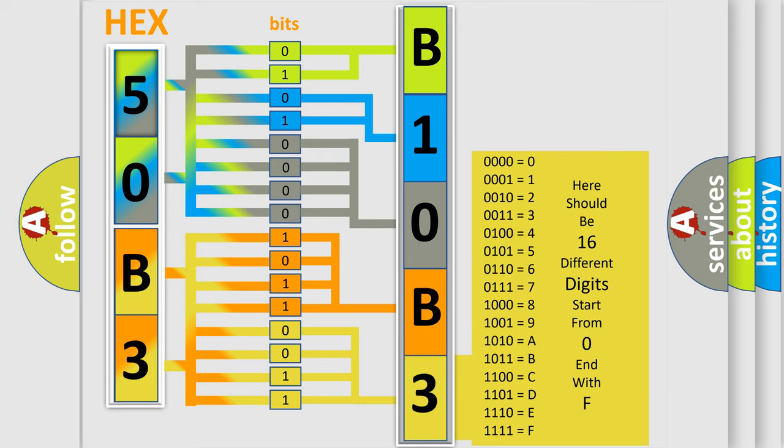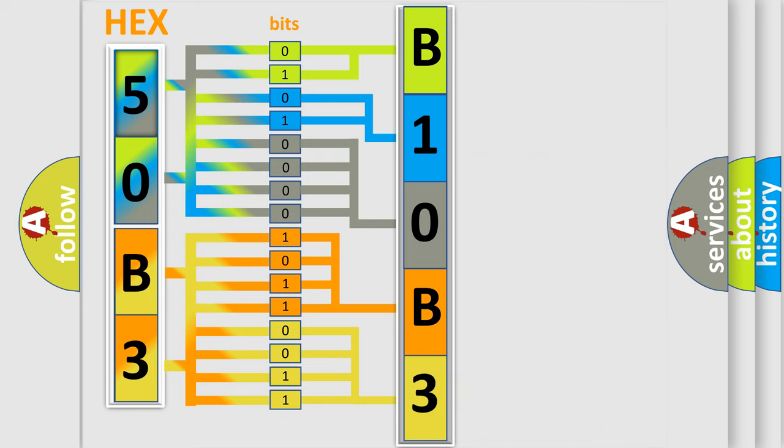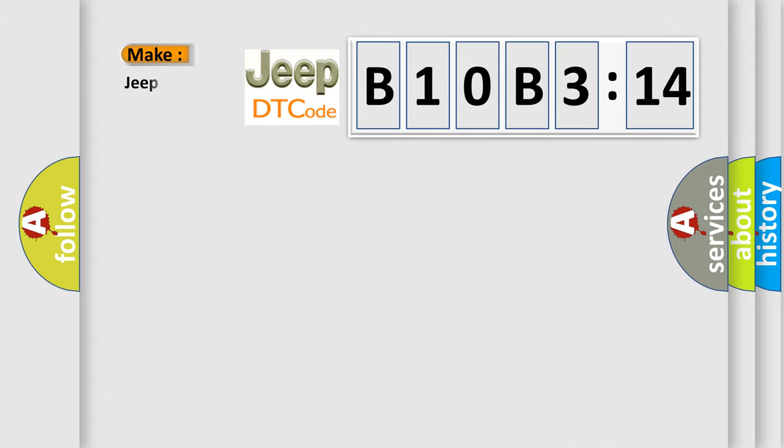We now know in what way the diagnostic tool translates the received information into a more comprehensible format. The number itself does not make sense to us if we cannot assign information about what it actually expresses. So, what does the diagnostic trouble code B10B314 interpret?